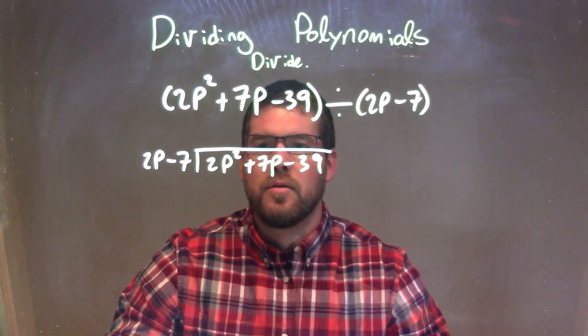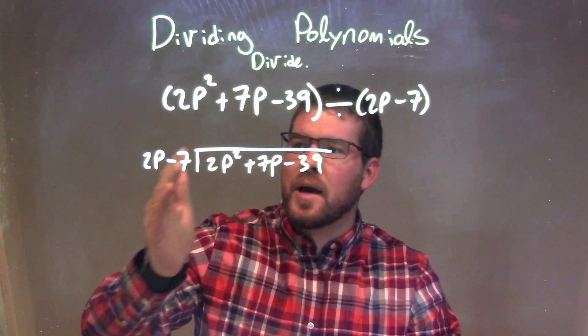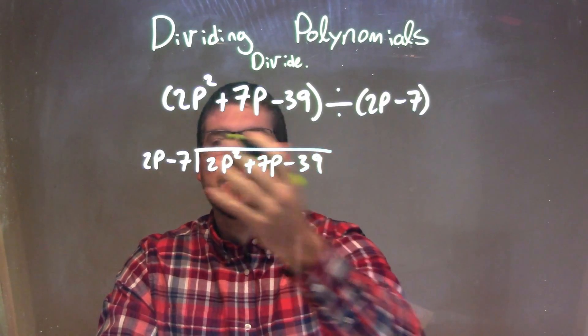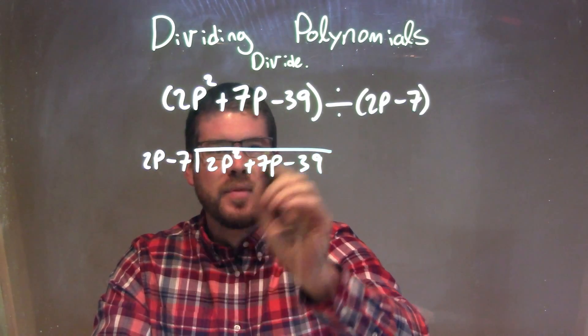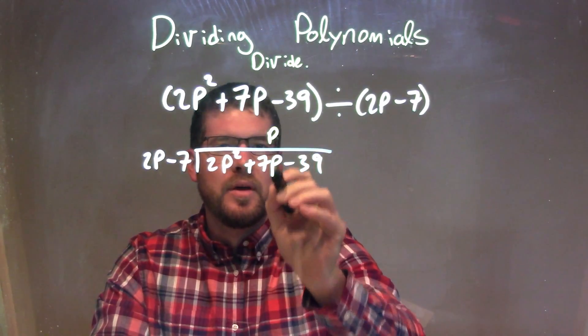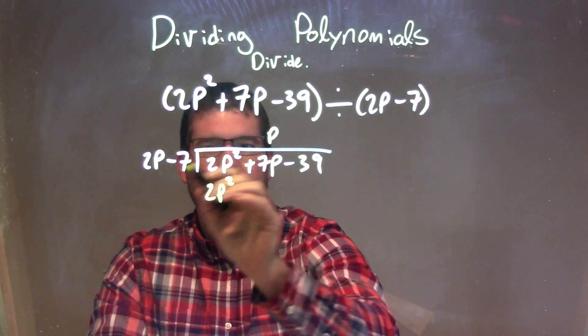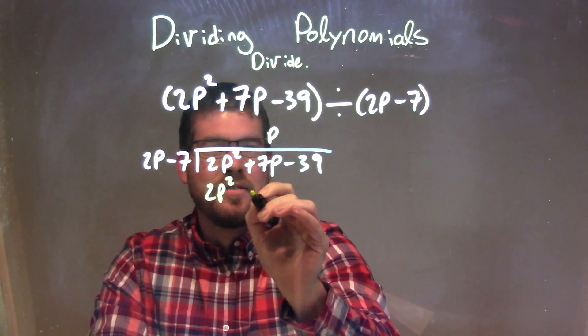And now I'm going to ask myself a question here. What times 2p gives me 2p squared? That's just p, right? p times 2p is 2p squared. So the p in the place value of the p is, p times 2p is 2p squared. And it's multiplied by the minus 7, p times minus 7 is minus 7p.